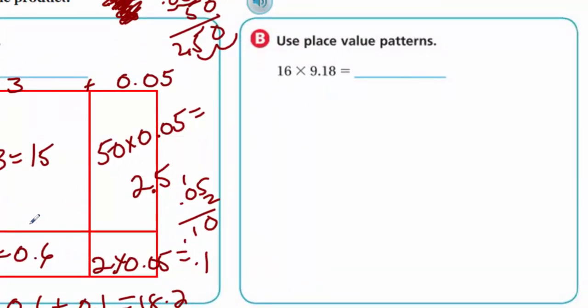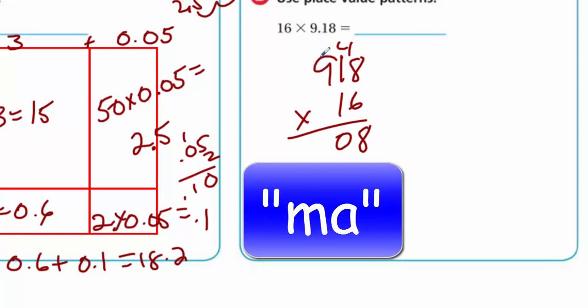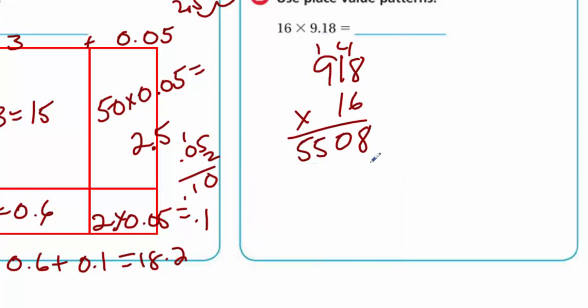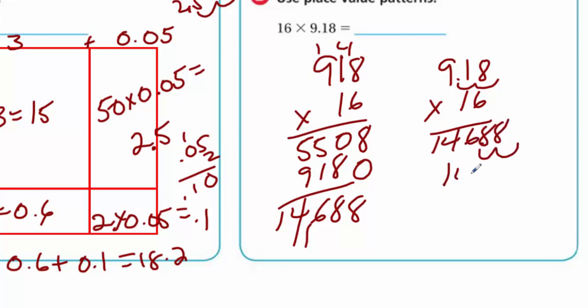Here use place value patterns. I took the decimal, I'm just going to put 918 times 16. That way I don't have to worry about the decimal right now. That's 48, carry the 4. 6 and 4, that's 10. Carry the 1. 54 plus 1 is 55. Placeholder. Now I have 8, 1, 9. We have 14,688. Now our answer is 146.88. Because remember we had this number as 9.18 times 16. That means we need to multiply by one hundredth. So two decimal places give me 146.88.